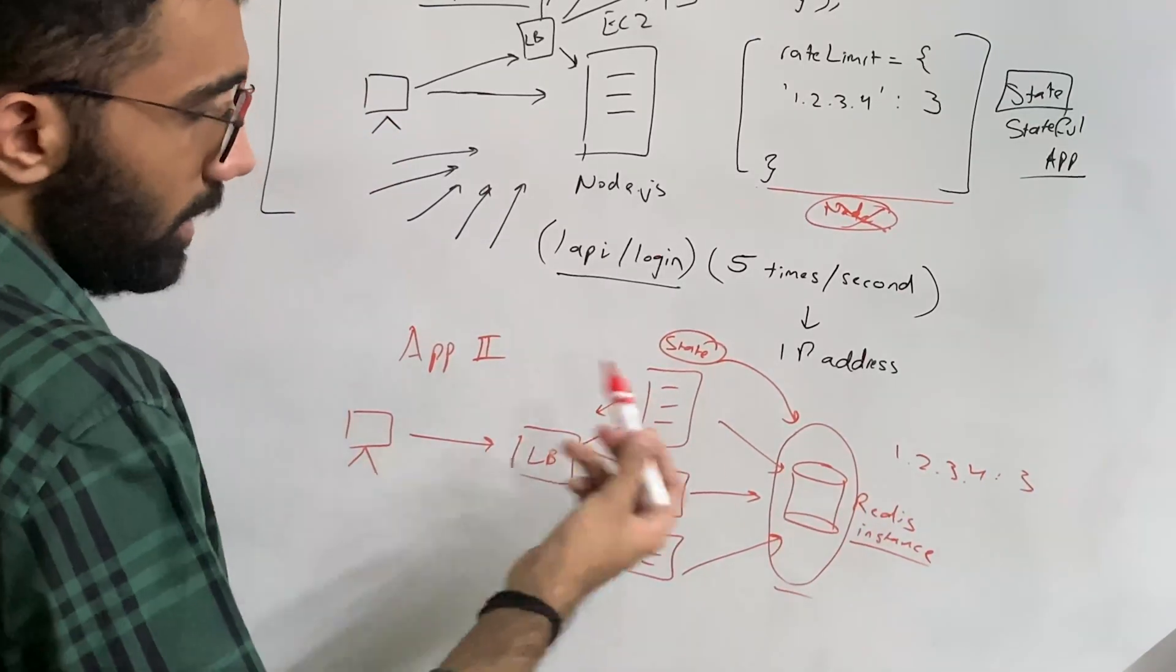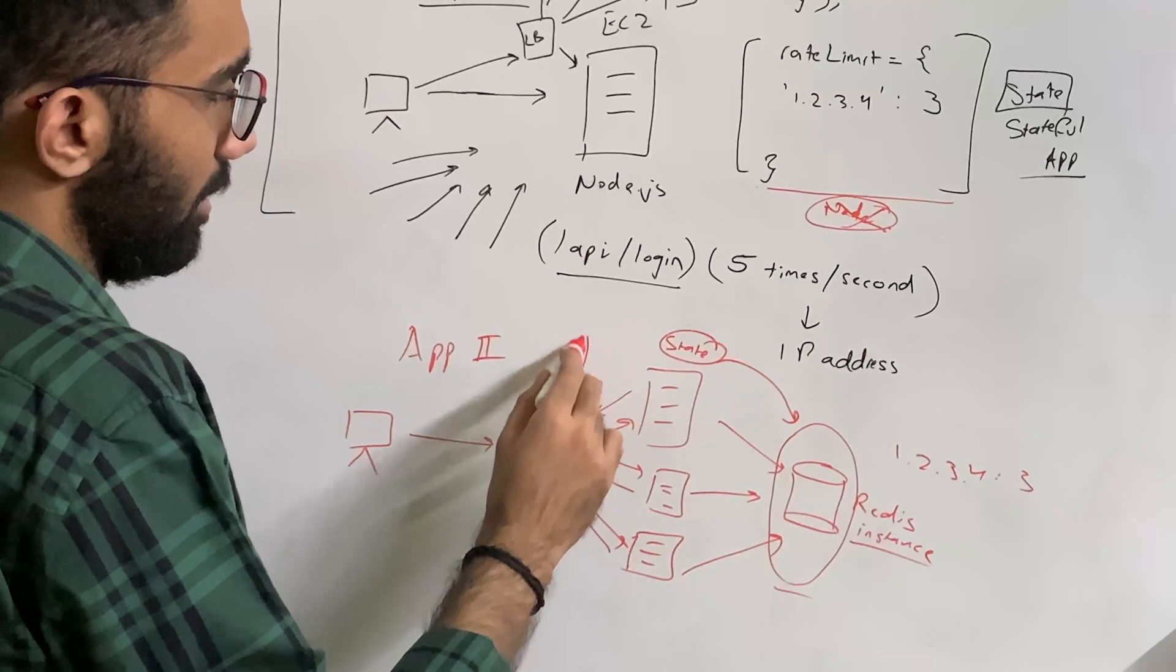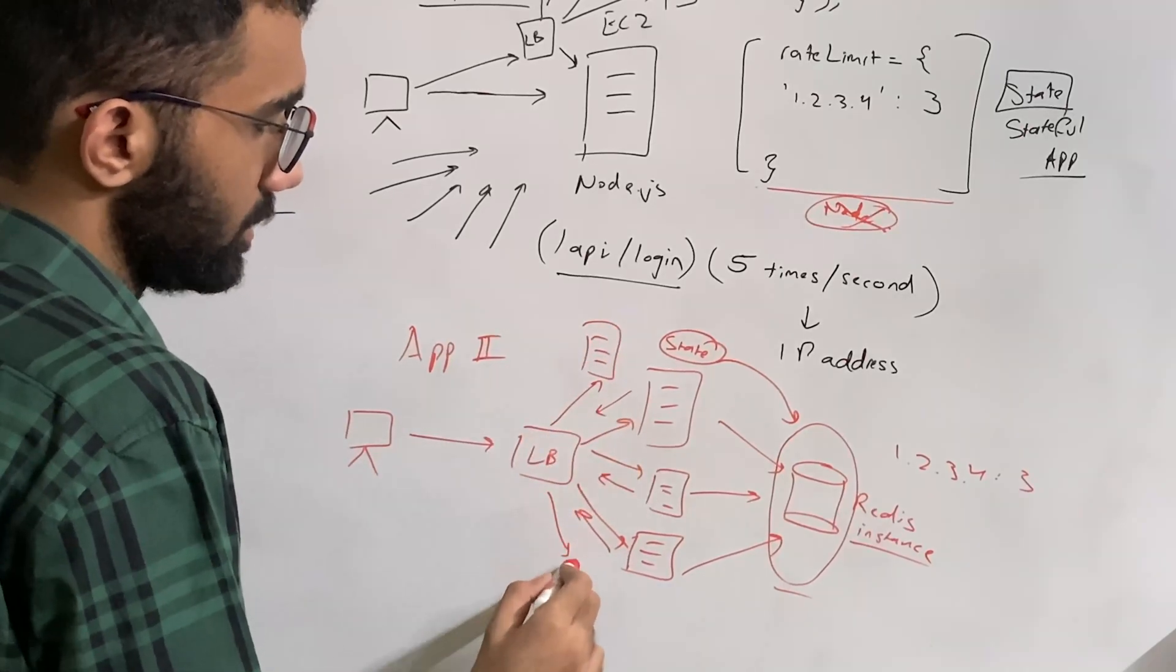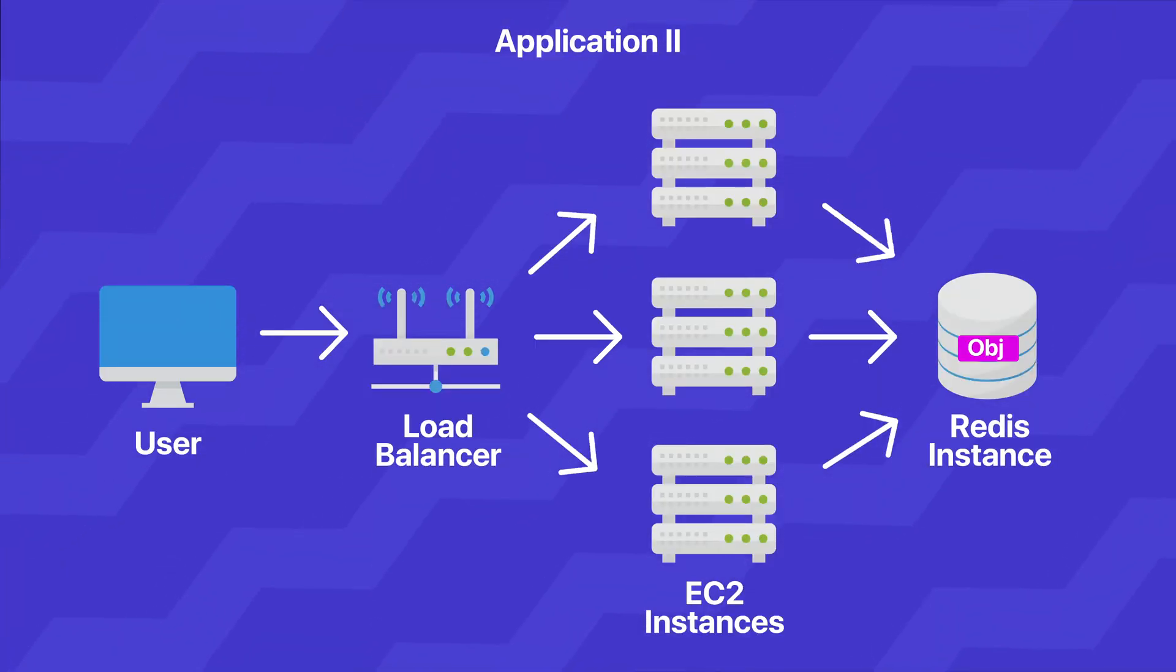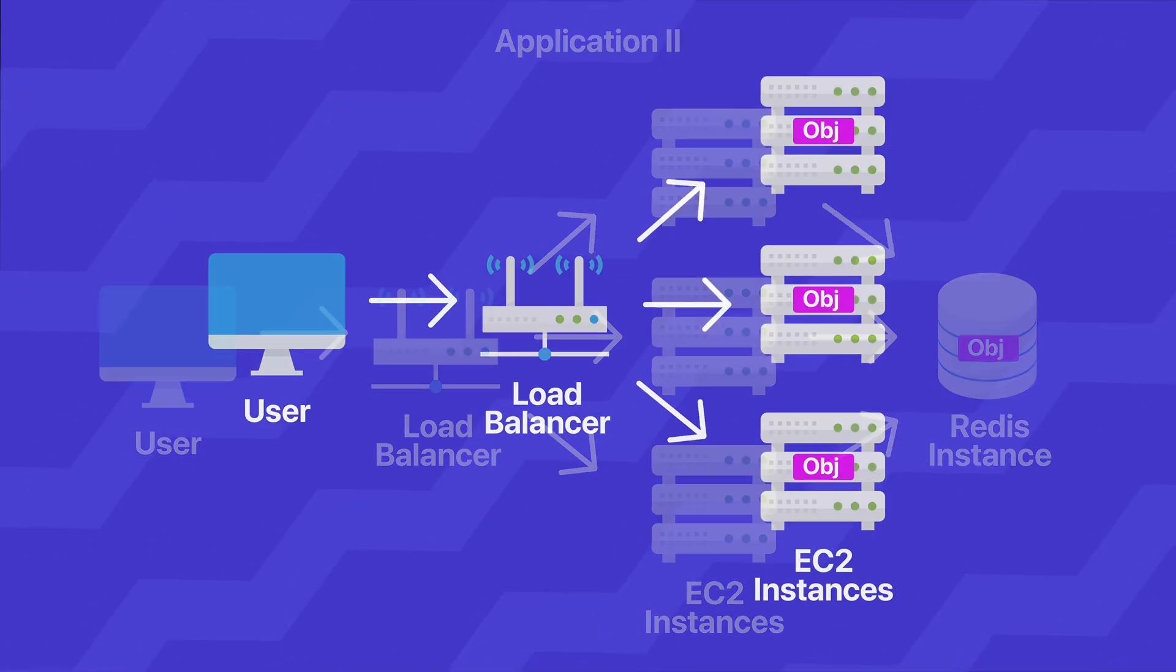And like I said, the advantage with this is you can pretty much have unlimited compute at your disposal, but all of them have to just go to the Redis instance. So in a way, I would say that this solution, in fact, is slower.